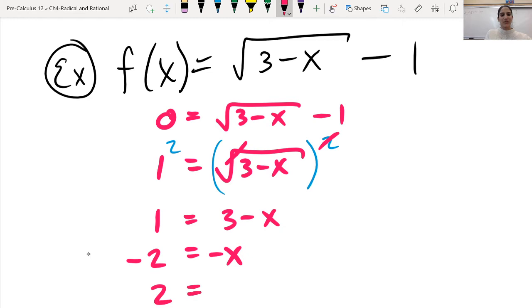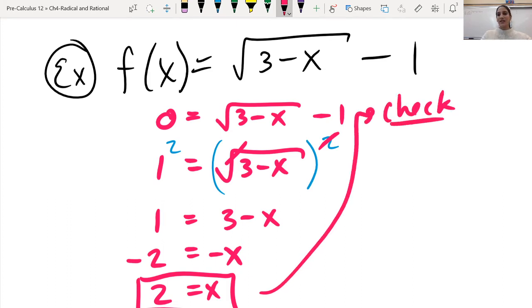But we don't want the negative, so 2 equals x when we divide both sides by negative 1.